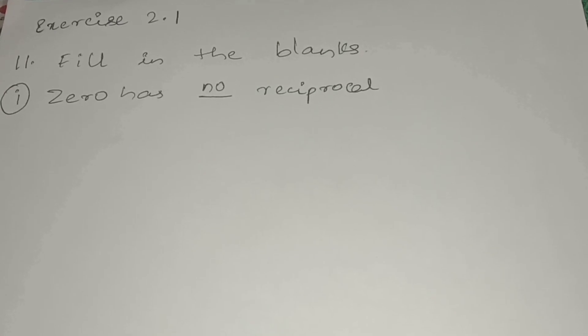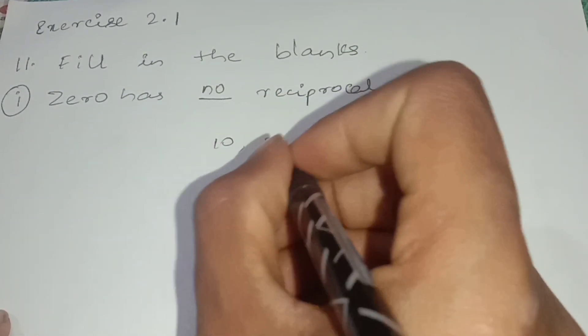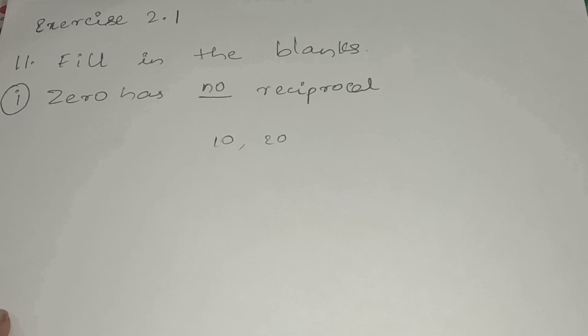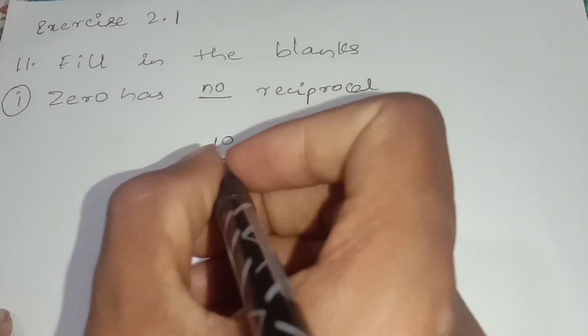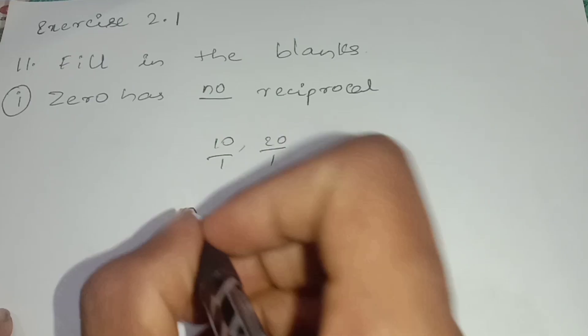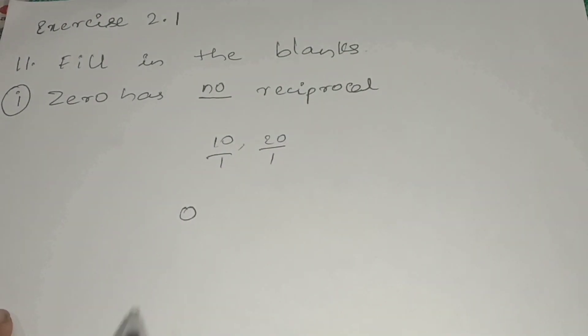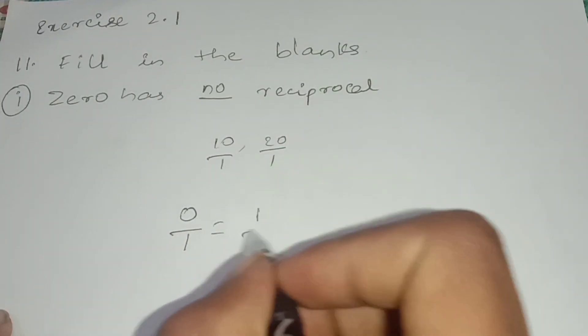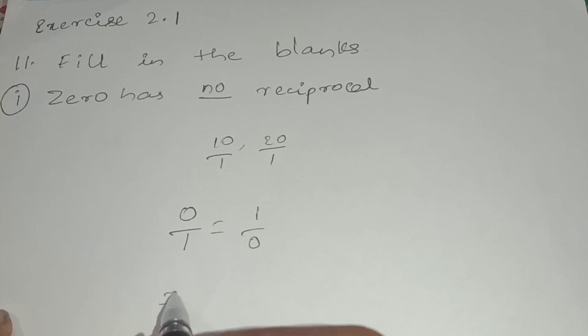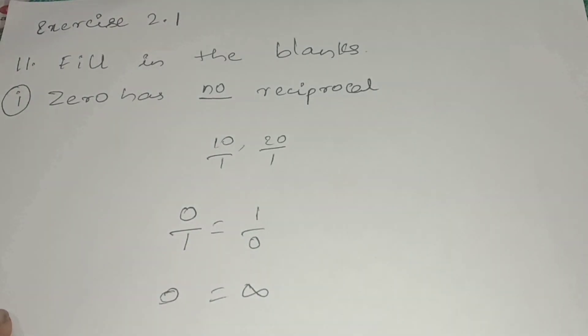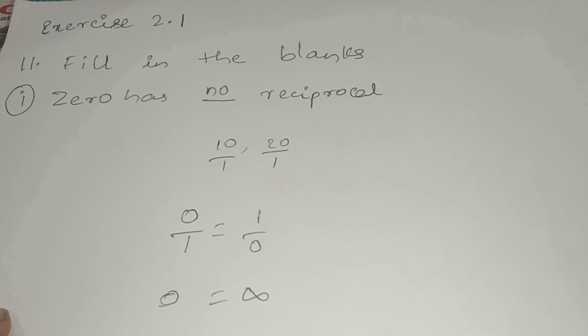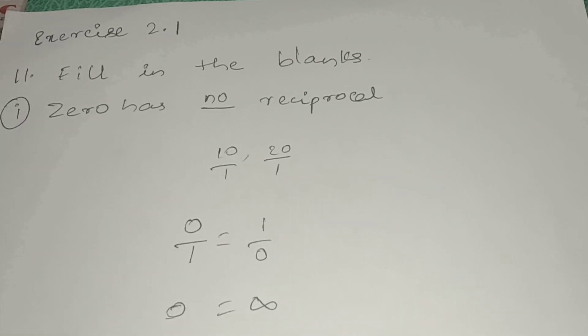Exercise 2.1, question number 11 - fill in the blank: zero has no reciprocal. If I take a number like 10, 20, or 30, when the denominator is not given, it is considered as 1. So if I take 0, its denominator is considered as 1, giving 0 by 1. The reciprocal would be 1 by 0, which is infinity - and infinity is not defined. So 0 has no reciprocal.